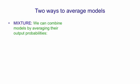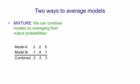I want to start by describing two different ways of combining the outputs of multiple models. In a mixture, we combine models by averaging their output probabilities. So if model A assigns probabilities of 0.3, 0.2, and 0.5 to three different answers, and model B assigns probabilities of 0.1, 0.8, and 0.1, the combined model simply assigns the averages of those probabilities.